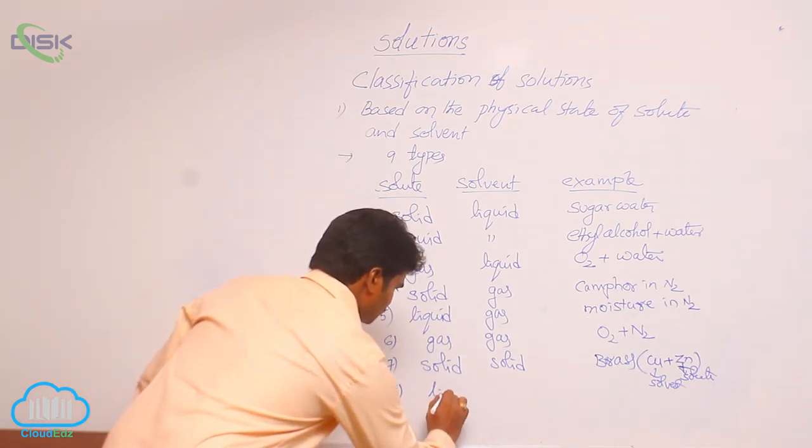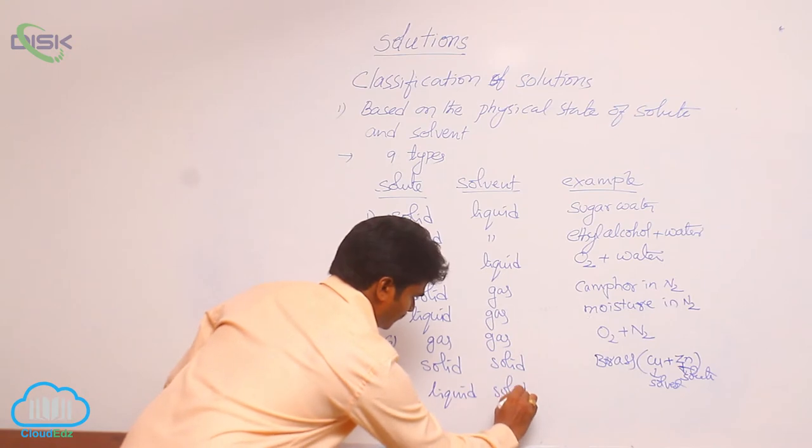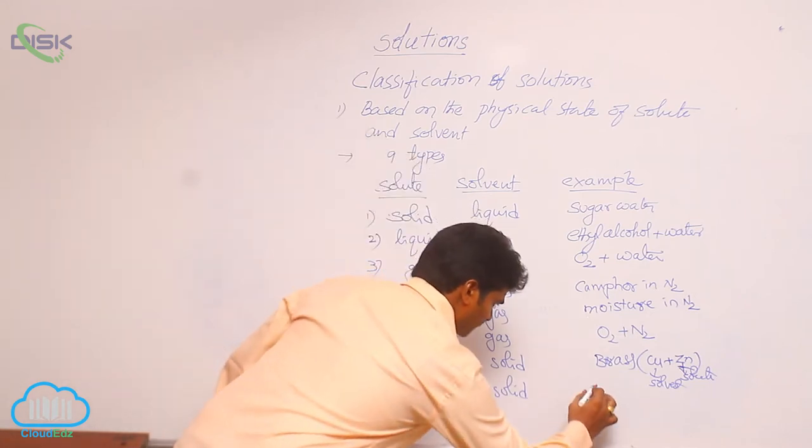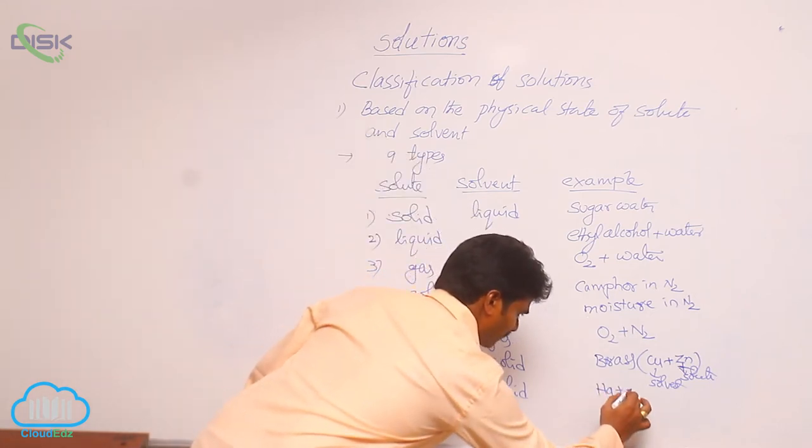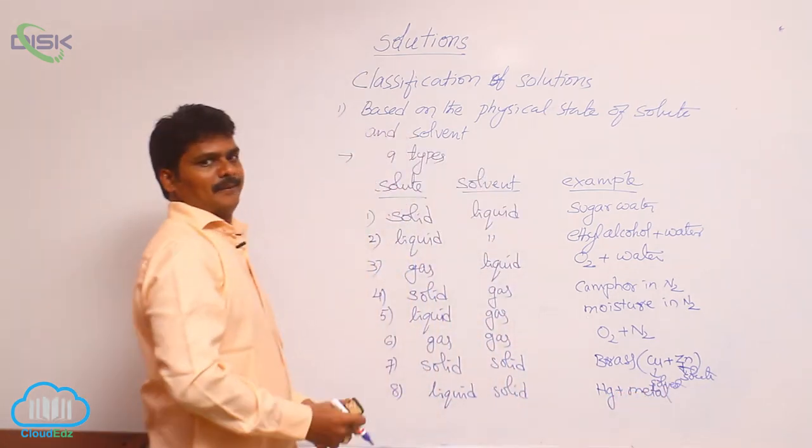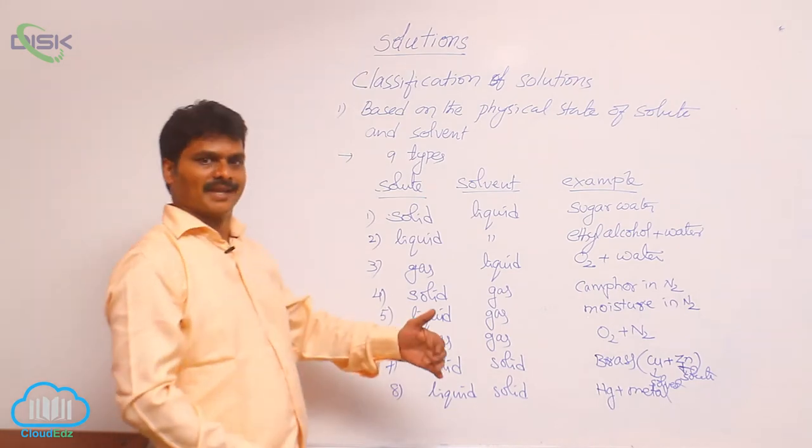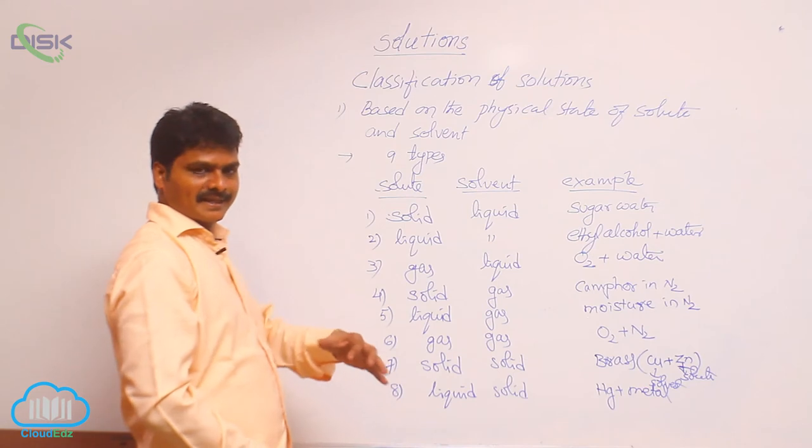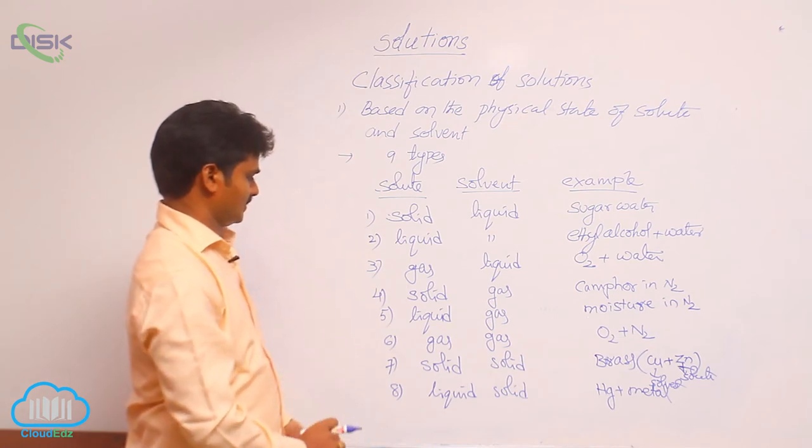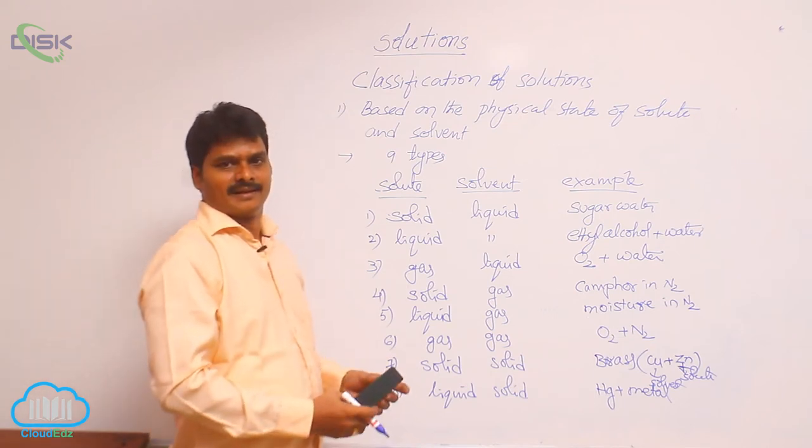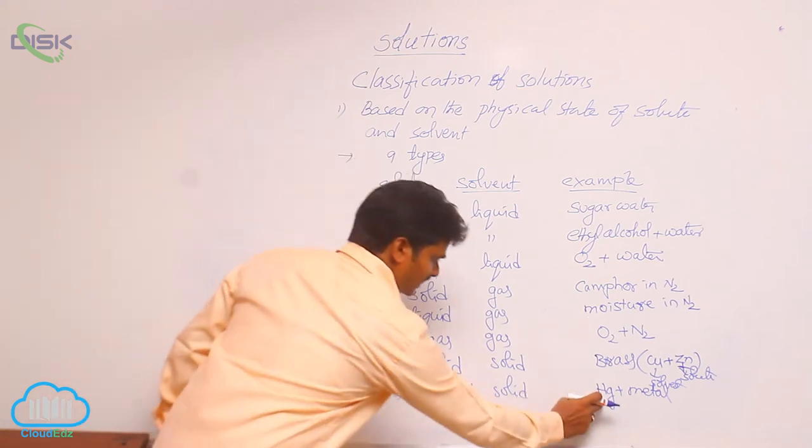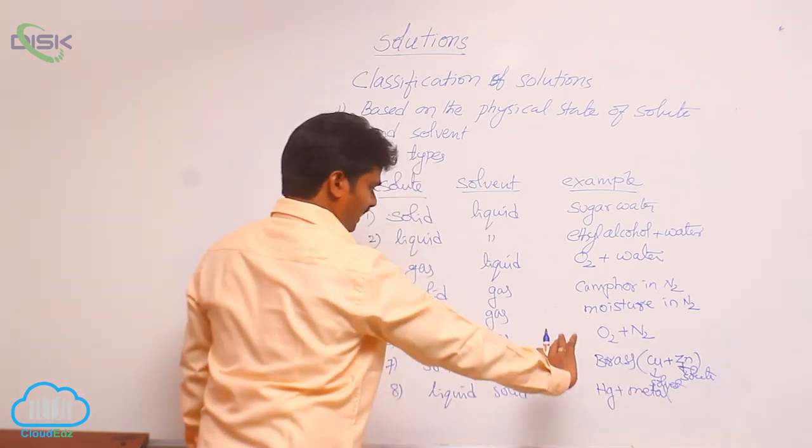Eighth one, liquid in solid. For this, amalgams are the examples. Amalgam means mercury in a metal, except iron and platinum. Because iron and platinum, they do not form amalgams. This is the reason why mercury is stored in either iron cans or platinum vessels. But platinum is a very costlier metal. That is why generally iron is used to store mercury. Mercury here solute, metal is solvent. It is liquid in solid type solution.